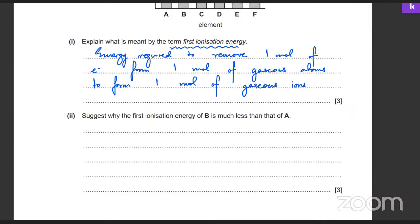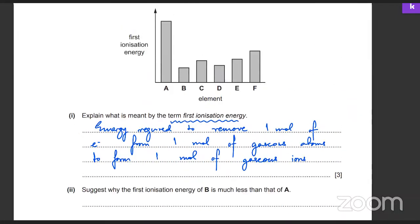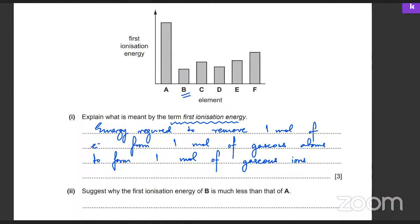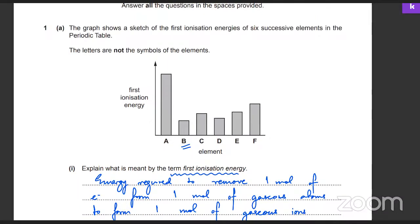The next part: suggest why the first ionization energy of B is much less than that of A. So why is B a lot less than A? These are successive elements in the period table — which group is it in? It is exactly group 8, that one is definitely group 8.